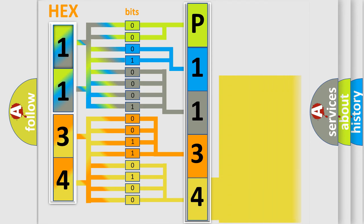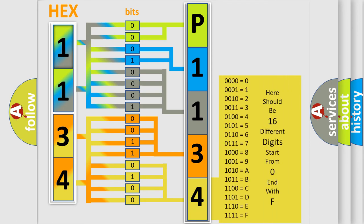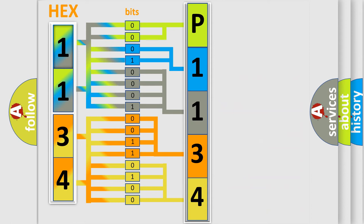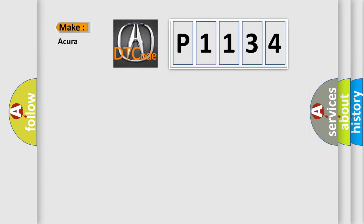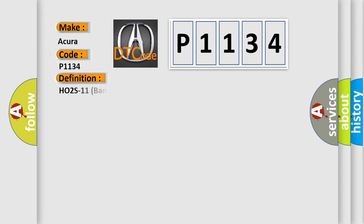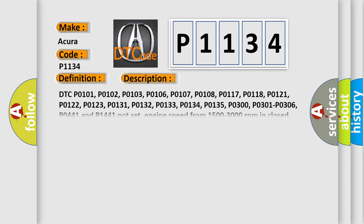A single byte conceals 256 possible combinations. We now know how the diagnostic tool translates received information into a more comprehensible format. The number itself does not make sense without knowing what it expresses. So, what does the diagnostic trouble code P1134 interpret specifically? The basic definition is: HO2S11, Bank 1, Sensor 1, Transition Time Ratio Error.